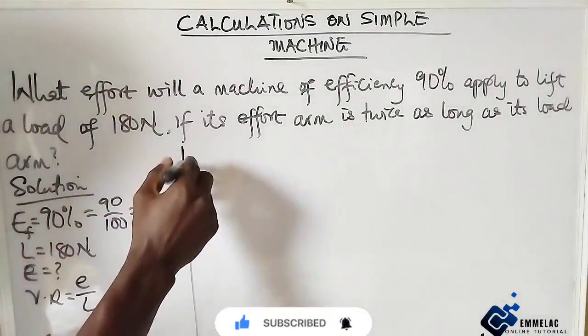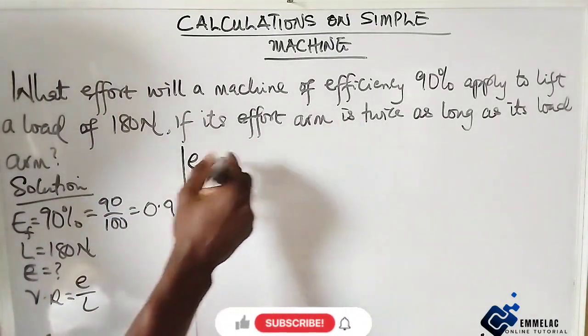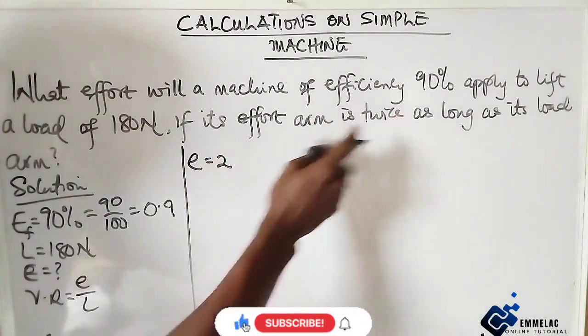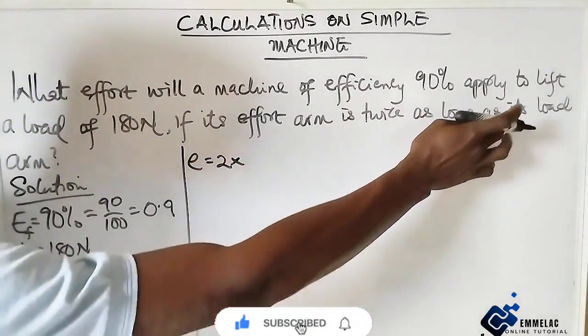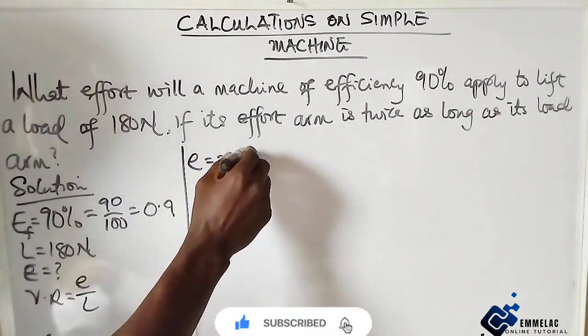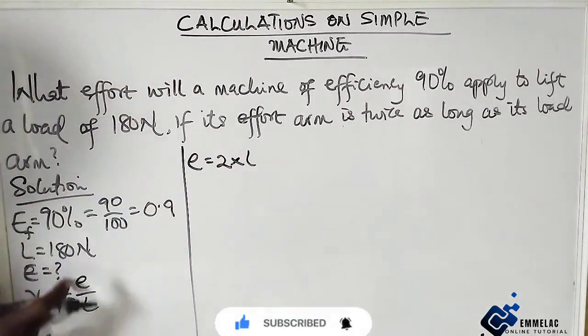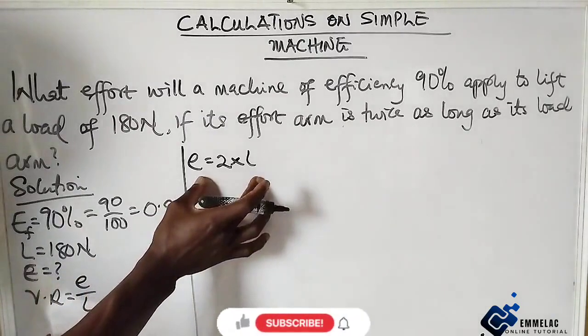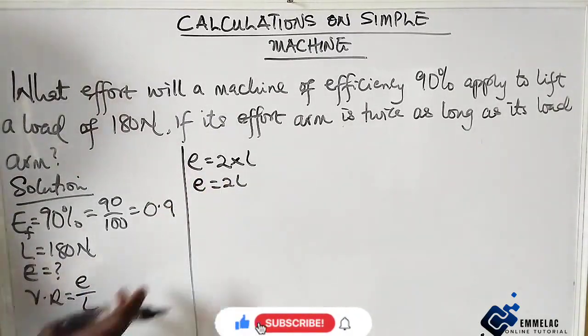That effort here is twice as long as its load arm. Now from here, let us see if we can get this ratio from this expression. So here we have E equals 2L. Now for us to get this...